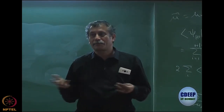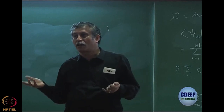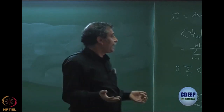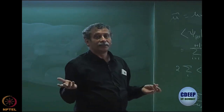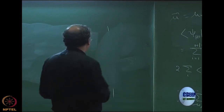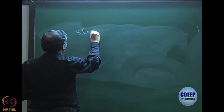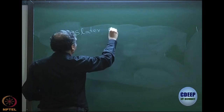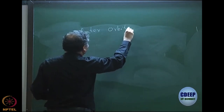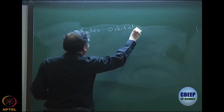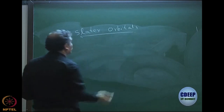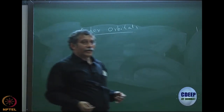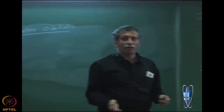That is why we have taken a general non-orthonormal basis set, but your A_mu, N_u could have been anything. Normally we would like to use atomic orbitals, and the orbitals which are eigenfunctions of atoms are called the Slater orbitals.